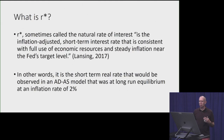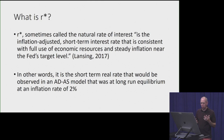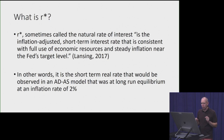So the first thing we need to look at is: what is r-star? R-star is sometimes called the natural rate of interest, and by Laubach and Williams' definition, is the inflation-adjusted short-term interest rate that is consistent with full usage of economic resources and steady inflation near the Fed's target level. It's really just the short-term interest rate that would exist in an aggregate demand/aggregate supply model at long-run equilibrium at an inflation rate of 2%, which is the Fed's target.